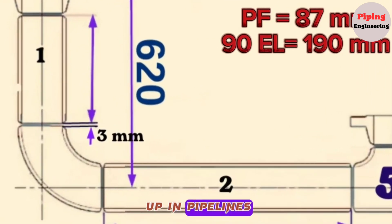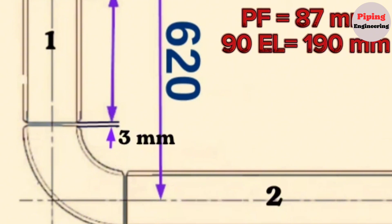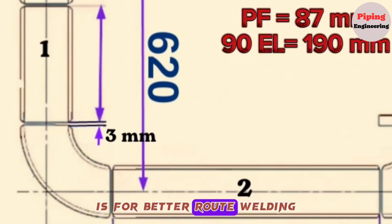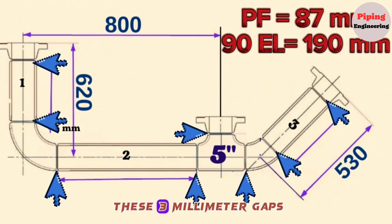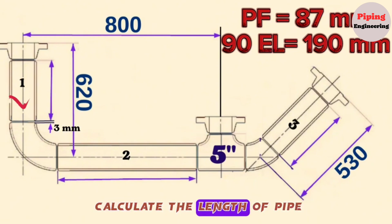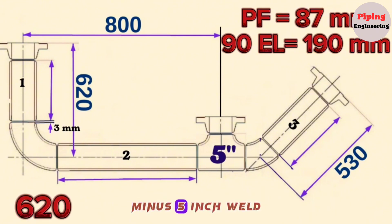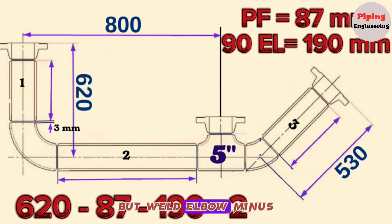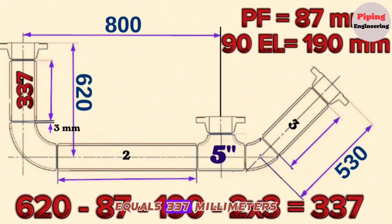During a fit-up in pipelines, welding gaps of approximately 3 mm should be placed between pipe fittings for better root welding. In our isometric drawing there will be fit-ups in 8 places, and we should consider these 3 mm gaps when calculating pipe lengths. For pipe piece Item 1: overall length 620 mm, minus weld neck flange 87 mm, minus 90-degree long radius butt weld elbow 190 mm, minus 2 × 3 mm welding clearance, equals 337 mm.